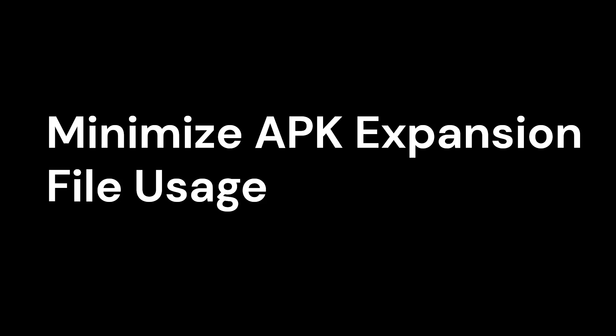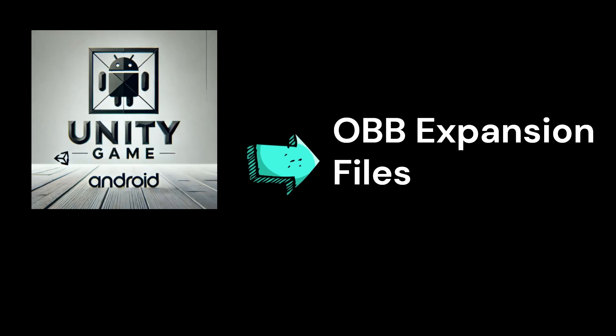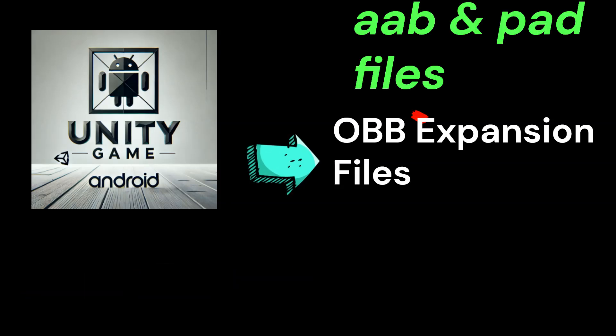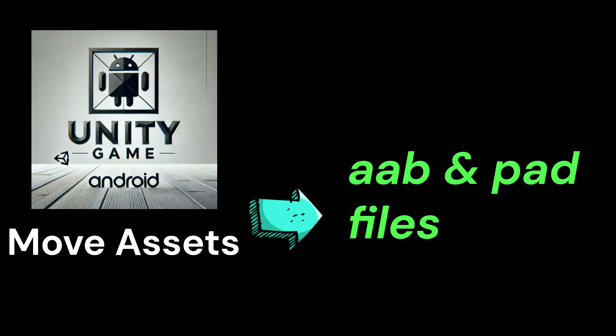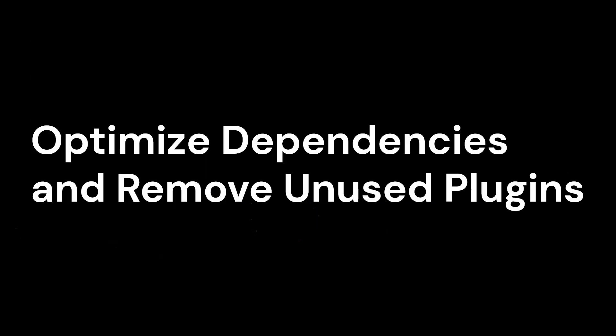Minimize APK Expansion File Usage. Traditionally, Unity games over 150MB required OBB Expansion Files, but with AAB and PAD this is no longer necessary. Move assets into Addressable Asset Bundles or Play Asset Delivery instead of relying on OBB files.